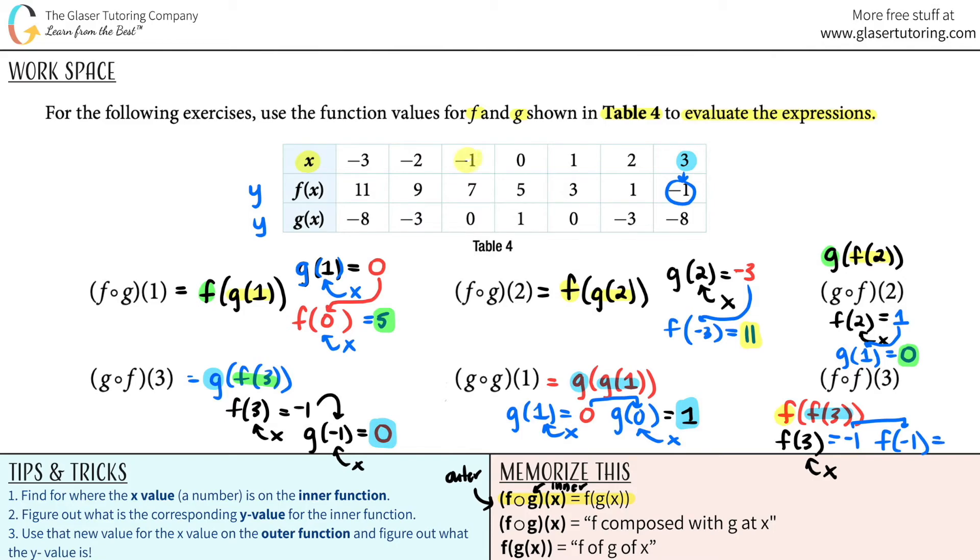So my new x value, right? This is my new x value. My new x value was a negative 1. It's an f function. So you go down to the f. And it turns out that it's a 7. And that is it.